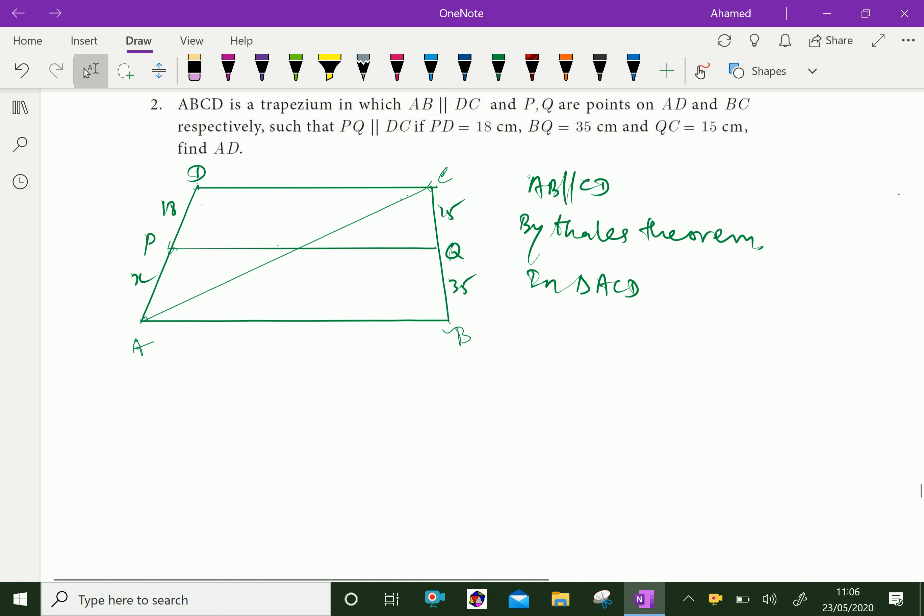AP, put the point mid at this point G. AP by PD equal AG by GC.